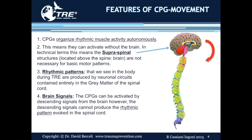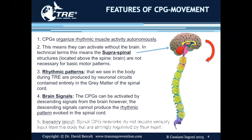The central pattern generators can be activated by descending signals from the brain. However, the descending signals from the brain cannot produce the rhythmic pattern evoked in the spinal cord. Sensory input works the same way — spinal central pattern generator networks do not require sensory input from the body, but are strongly regulated by that input.